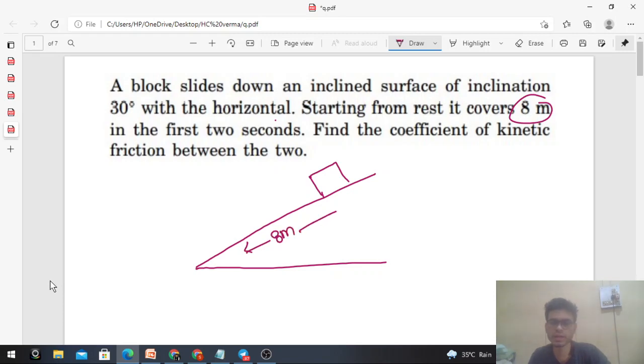So 8 meter distance traveled in 2 seconds. Can you find out the acceleration of this block? Of course, initial velocity is 0. Then which equation can we use to find the acceleration? s equals ut plus half at squared. So s will be 8 meters, u is 0, so half into acceleration into time is given 2.